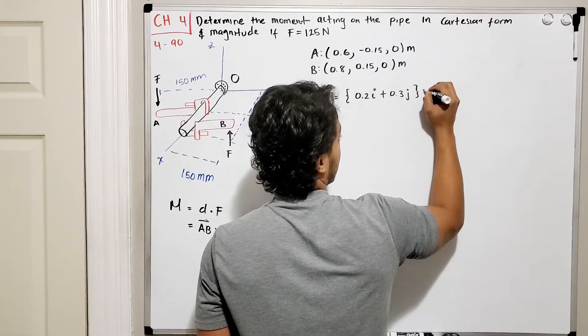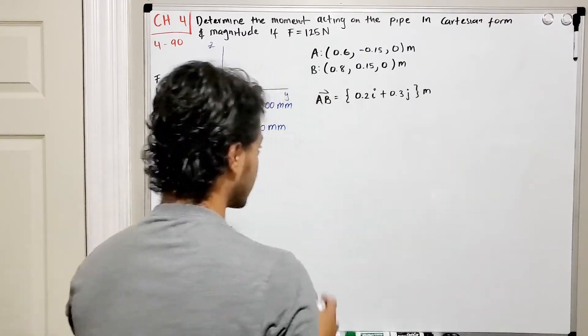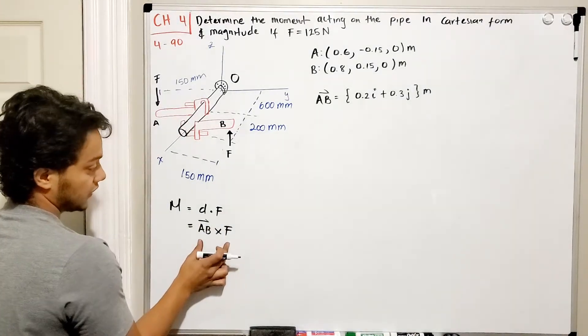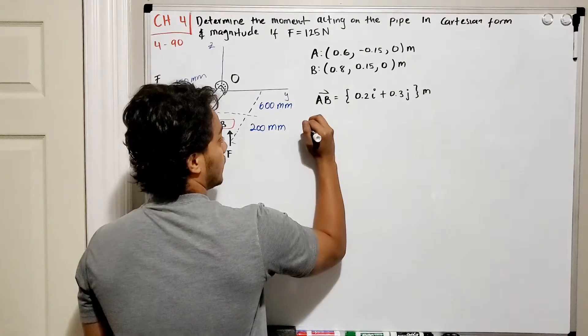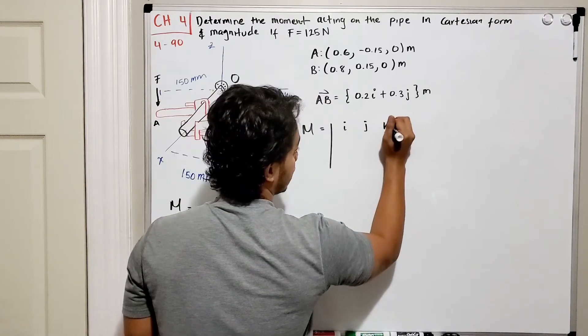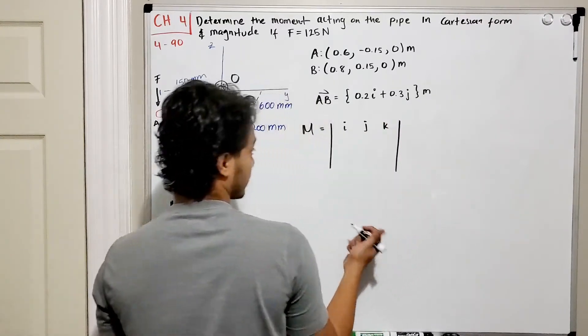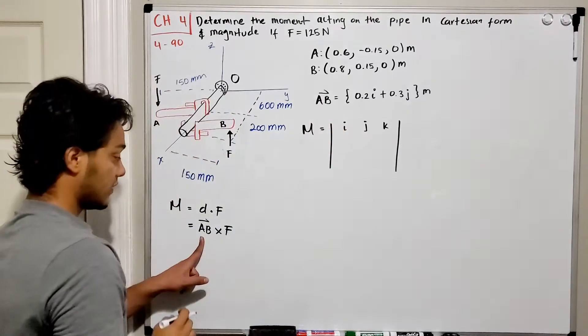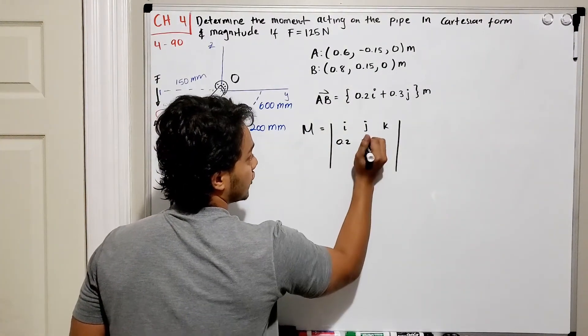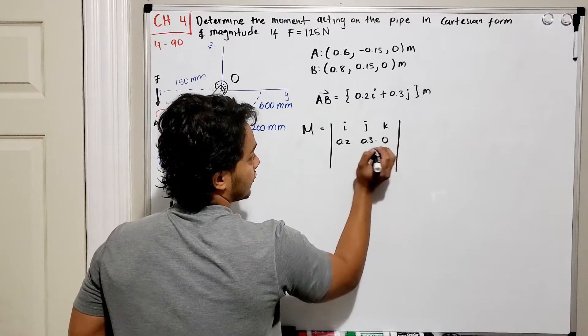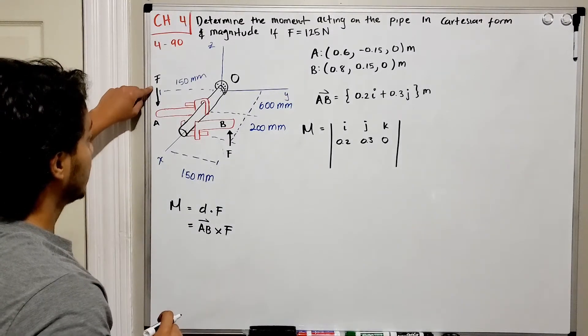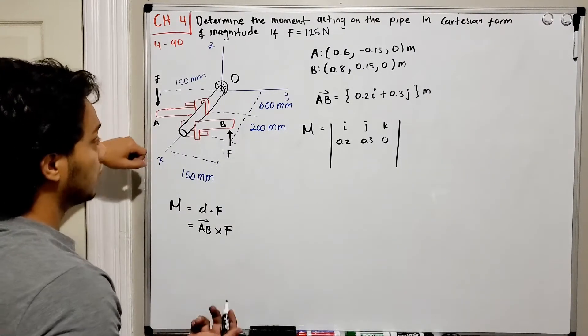And then in the z-direction I have 0 minus 0 gives me 0 all the time and these guys are in meters. Now since we found our distance vector AB all we need to do is our cross product between AB and my force. So moment it's going to be equal to, I have the i-direction, j-direction and k-direction, and then since it's AB cross F, I need to put first AB. So for AB I have 0.2 in the i-direction, 0.3 in the j-direction, and 0 in the k-direction.